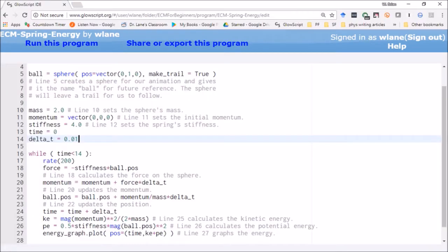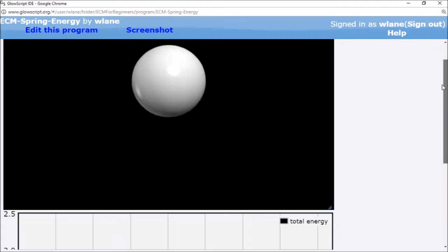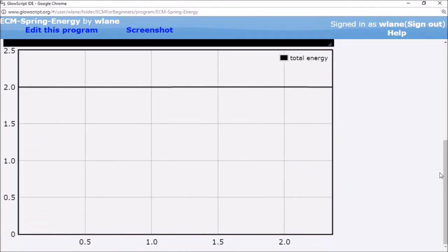As in the last video, we can increase the accuracy of our code by decreasing the time step. If we lower the step size by a factor of 10 and run the code again, we get a much flatter line for the total energy.